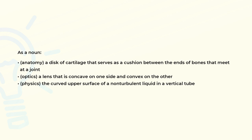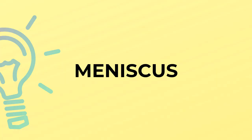Physics, the curved upper surface of a non-turbulent liquid in a vertical tube. Meniscus is spelled M-E-N-I-S-C-U-S.